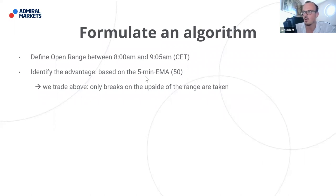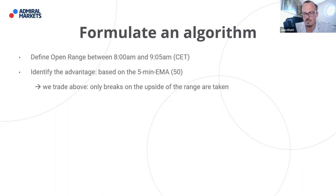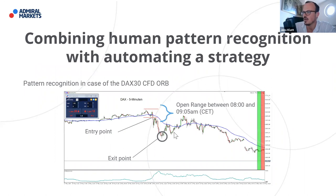Some people ask me why I use the EMA 50. I use it because coincidentally, when I started trading, I had this exponential moving average as default in my trading platform, and I saw that when I looked at the DAX on M5, the market reacted against this level — it acted as a kind of moving support or resistance. In the case of an intraday uptrend, the market reversed moves against the trend quite often at this level.